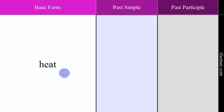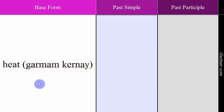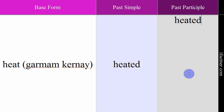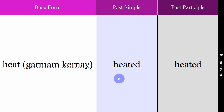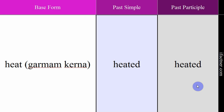The next verb is 'heat'. While heat means garmi as a noun, as a verb it means garm karna — to heat something. Example: 'Can you please heat my tea?' — Kya aap meri chai garm kar sakti hain? Past simple form: heated. Past participle form: heated. Past simple: 'He heated the room.' — Usne kamre ko garm kiya. Past participle: 'I have heated your milk.' — Mein aapka doodh garm kar chuka hoon. Verb: heat. Meaning: garm karna. Past simple: heated. Past participle: heated.